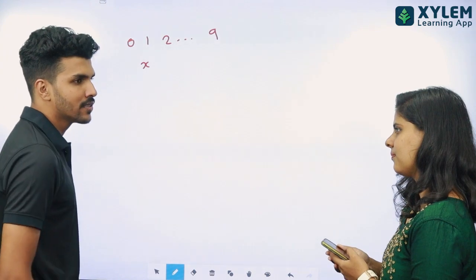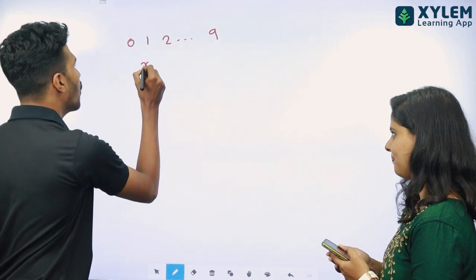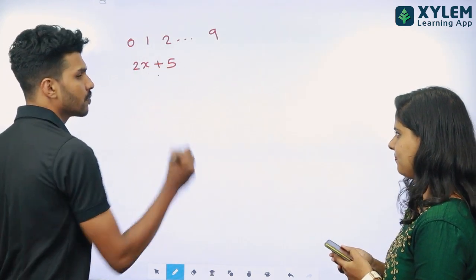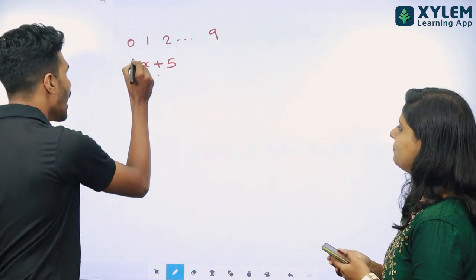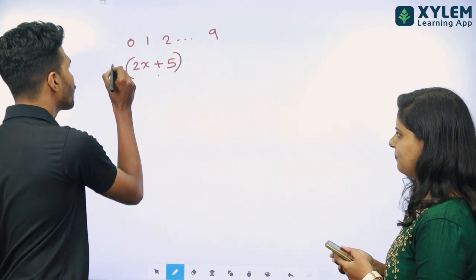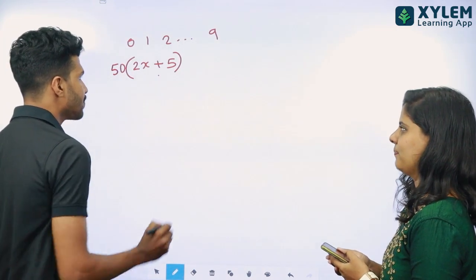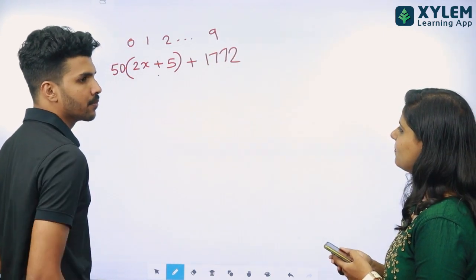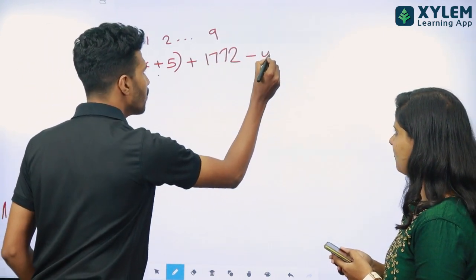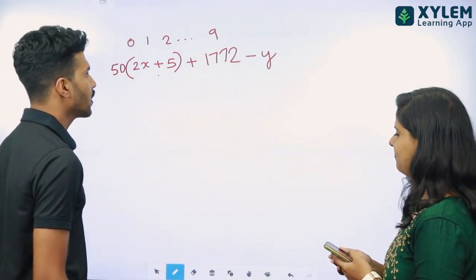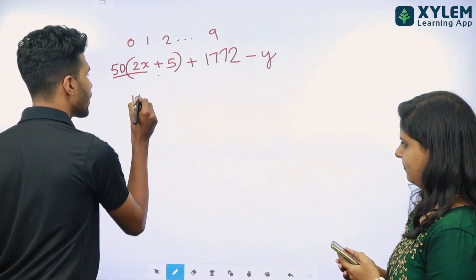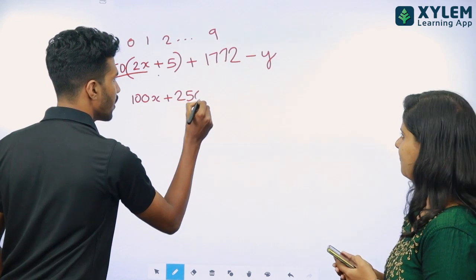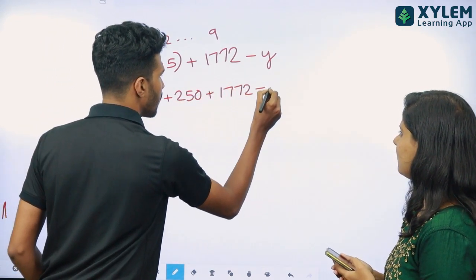What's the idea of it? W. So, x is W. It's 2x. That's 5. 2x plus 5. That's 50. 50, x is W. 50 times 2x plus 5. What's the idea of it? 1772. What's the idea of it? It's minus y. It's minus y. 50 times 2x, multiplied by 100x. 50 times 5 is 250. Plus 1772 minus y.